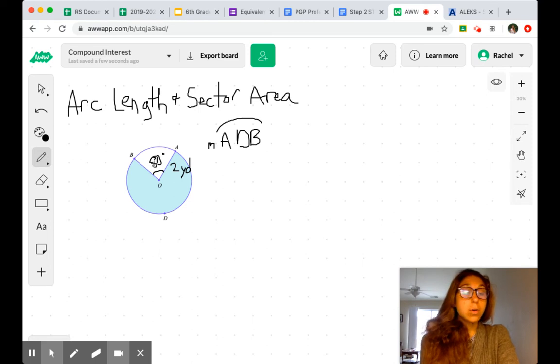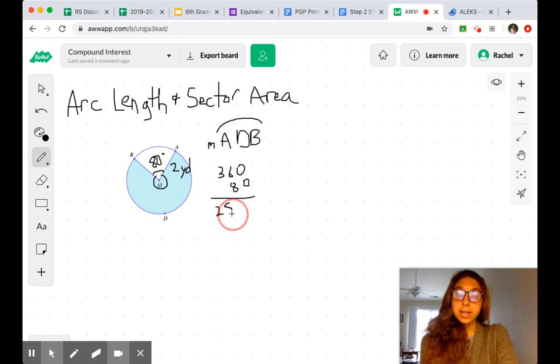We know that if this is 80 degrees, we can easily find this central angle. We're going to need that to find the arc length and the area of the sector. So hopefully we know that in order to find the difference, we need to do some subtraction. We get 280 degrees. That would not be such a good temperature to sit outside.